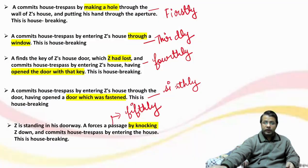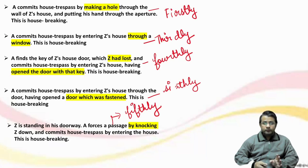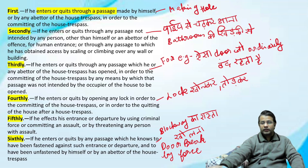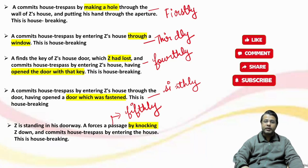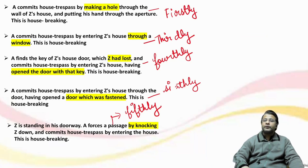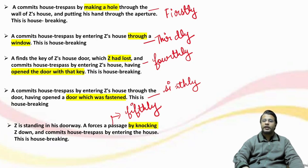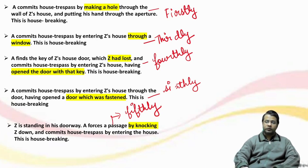तो आगे बढ़ते हैं — इसके illustrations देखते हैं। यह सारे illustrations are in accordance with the methods we discussed (1st through 6th). उदाहरण: A commits house trespass by entering Z's house through the door, having opened a door which was fastened — this is housebreaking, denoting the 6th method. फिर: Z is standing in a doorway, A forces a passage by knocking Z down and commits house trespass by entering the house — this is housebreaking।